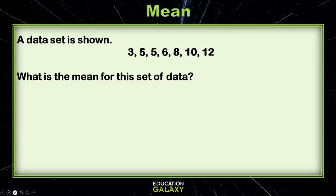Okay, so to calculate the mean, first we take all the numbers and we add them together. If we add these numbers together, we get 49. Then, you take 49, and since there were seven numbers, you divide it by seven. That gives us seven.